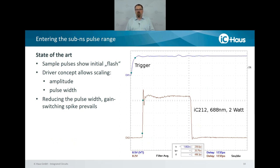A typical laser pulse generated with one of these nanosecond IC house laser diode drivers shows an initial flash at the rising edge. This is not a laser current overshoot — in fact, the true current rise time with this pulse would be just below one nanosecond. It is actually a relaxation effect inside the laser diode itself. It happens when the laser diode current crosses the laser threshold and the laser diode switches from spontaneous to stimulated emission.